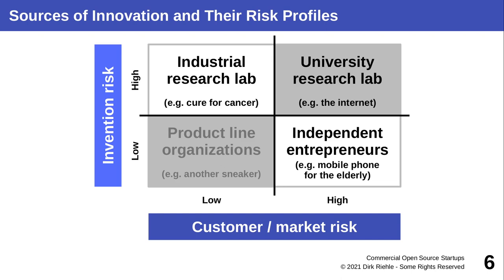If it was low risk, universities wouldn't do it and professors wouldn't be interested. It also probably has high customer and market risk, because otherwise it's much more easily funded by industry. For example, industry understands that if it could determine a cure for cancer, there would be a low market risk — plenty of customers. So the university research lab gives us innovations for a startup with both high innovation risk and high market risk. The innovation is paid for by the university, but if you build a startup on it, you're still facing high customer and market risk.